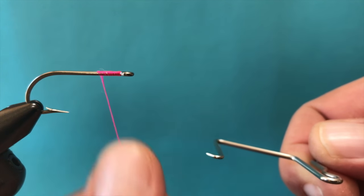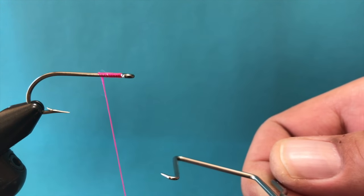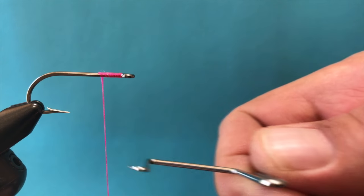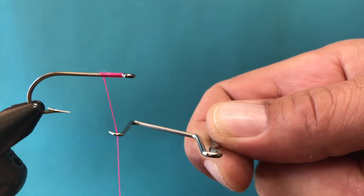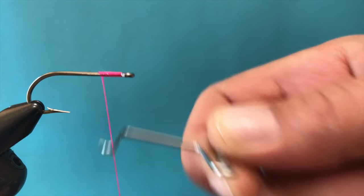And you also want to make sure that you're grabbing the thread or holding it tight with your bobbin so there's tension on the thread. So first, make your frisbee motion, grab the thread with the hook like that.